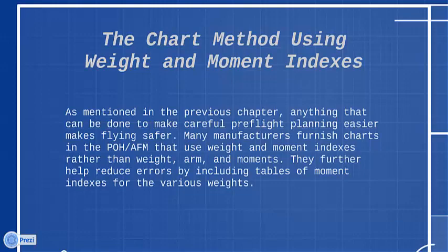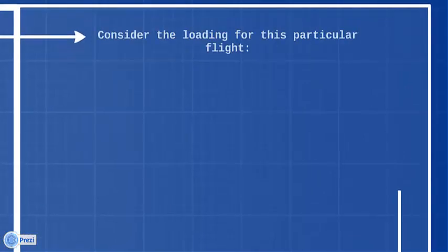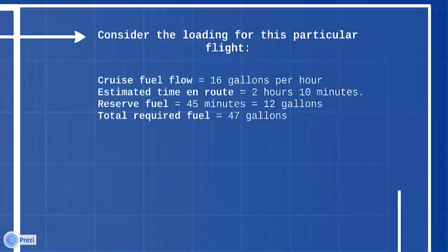Consider the loading for this particular flight: cruise fuel flow equals 16 gallons per hour, estimated time en route equals 2 hours 10 minutes, reserve fuel equals 45 minutes equals 12 gallons, total required fuel equals 47 gallons.